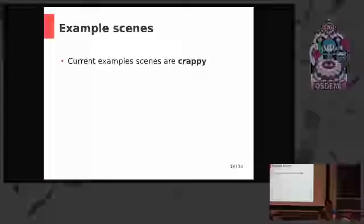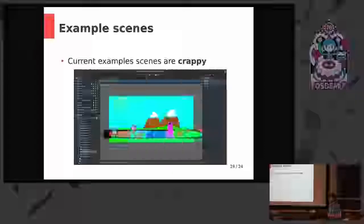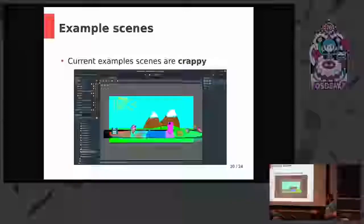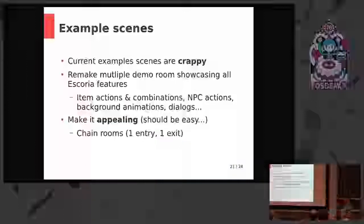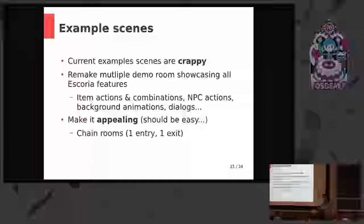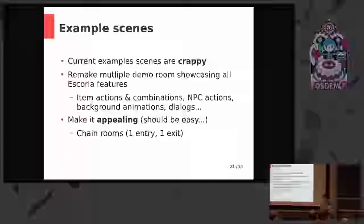And to finish on this — the example scenes. Currently Escoria comes with a few example scenes which are not great. So we want definitely something different. In order to do this, we'll make it from scratch — make multiple demo scenes showing different features of Escoria. That can be animation in the background in one scene, side-scrolling in another scene. This way, if one example room showcases only one feature at a time, it's easier for users to dive into Escoria and use it. And of course, make it a little bit more beautiful — because if I see what's there now for the first time, I'd run away.